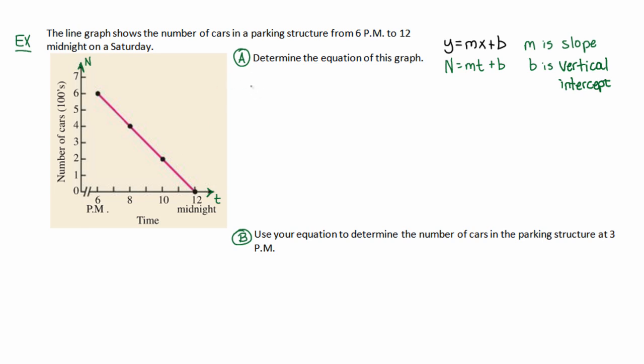The slope, as you should recall, is just rise over run, which is also written as y2 minus y1 over x2 minus x1, where x2, y2, and x1, y1 are just points on your graph.